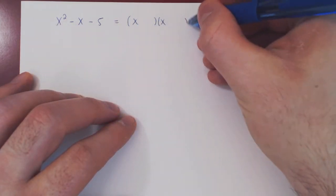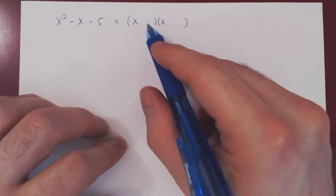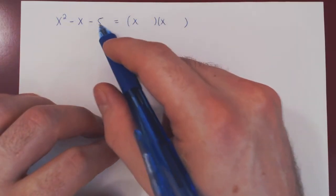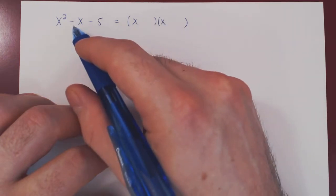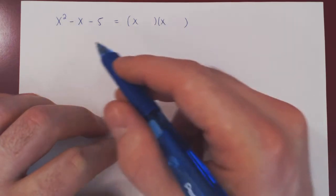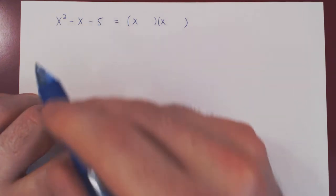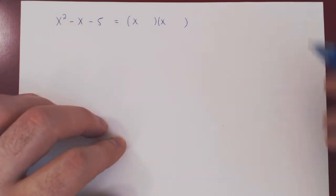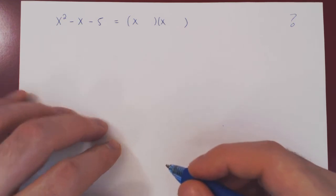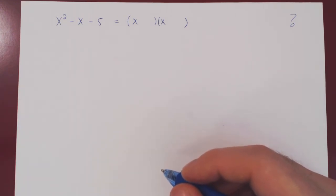As it is a quadratic, there will be two factors. The product would be negative 5 and the sum would be negative 1. Can you come up with two real numbers whose product is negative 5 and whose sum is negative 1? It's not so obvious. Actually, you can stare at this as long as you want, the odds are you won't come up with it.